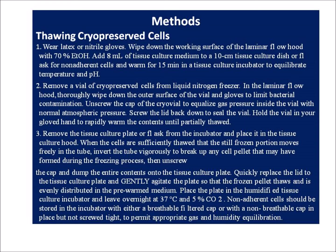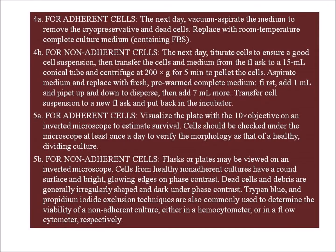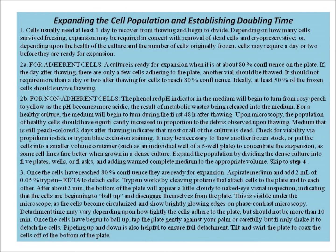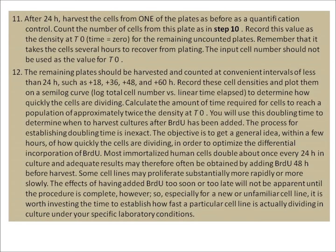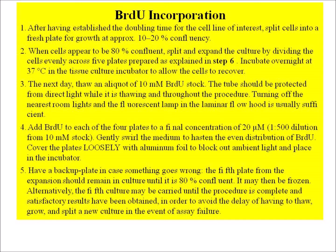The methods used for the Sister Chromatid Exchange test include the method for thawing cryopreserved cells — both adherent and non-adherent — with different procedures given for each. The process of expanding the cell population and establishing doubling time for adherent and non-adherent cells is described. Values should be recorded at each step. The next stage is BrdU (Bromodeoxyuridine) incorporation.